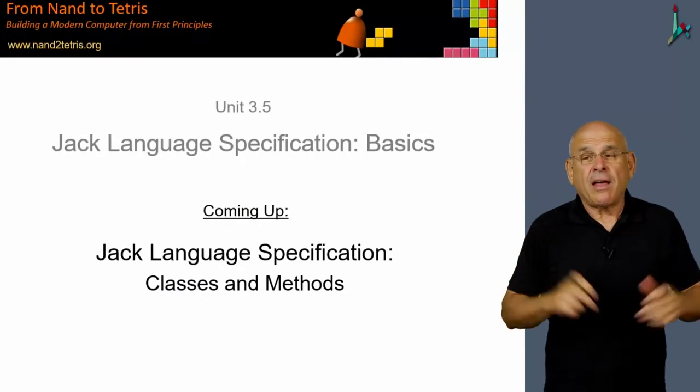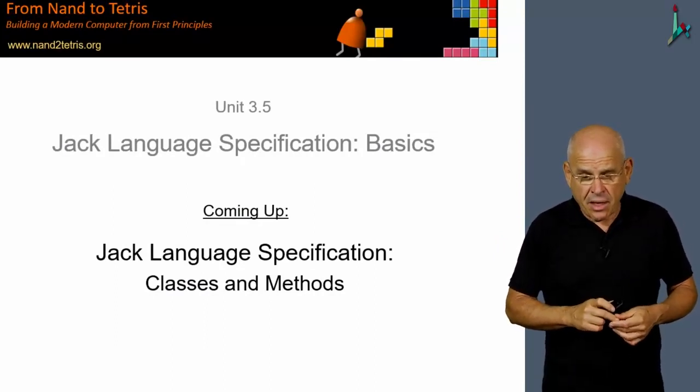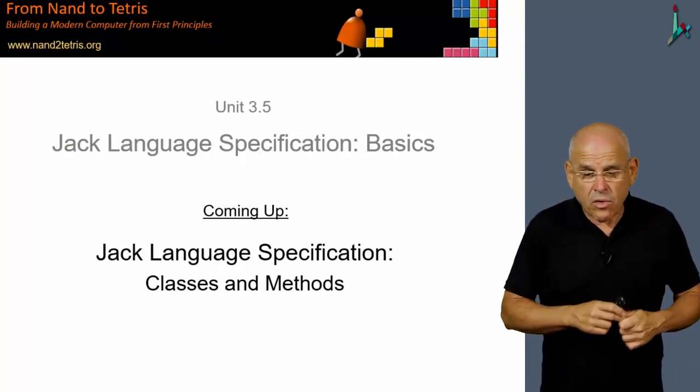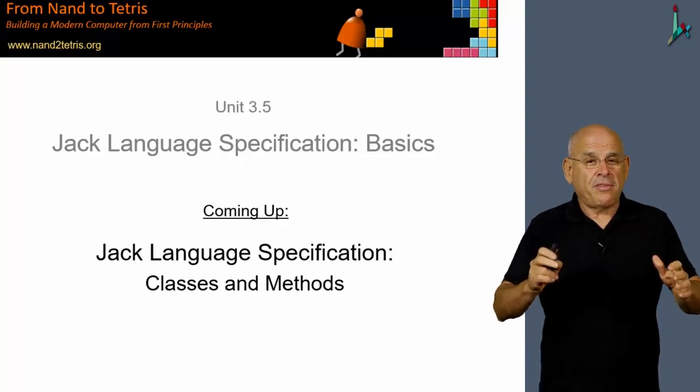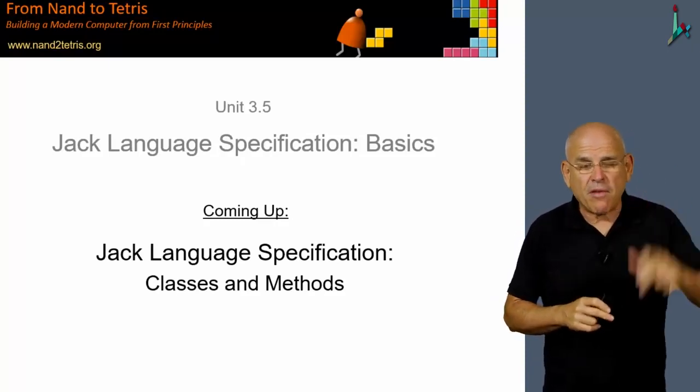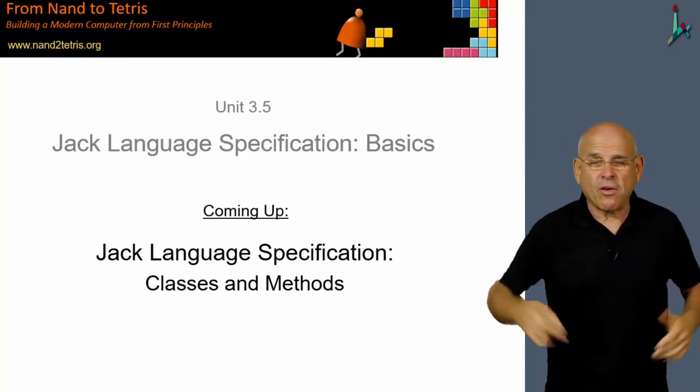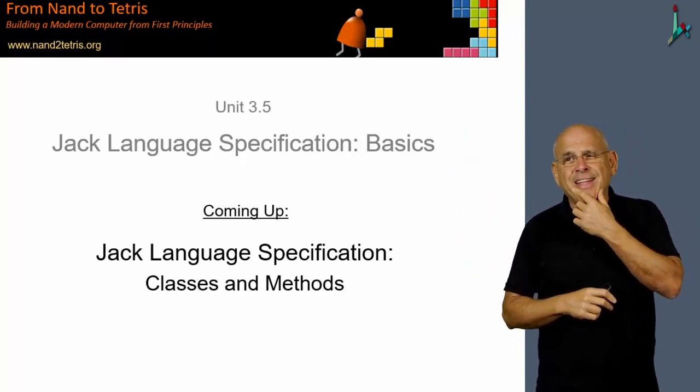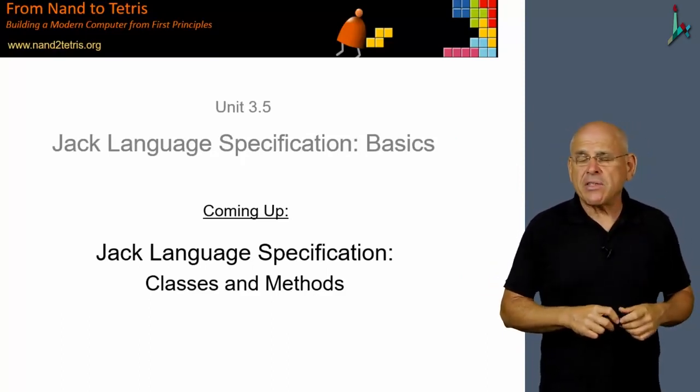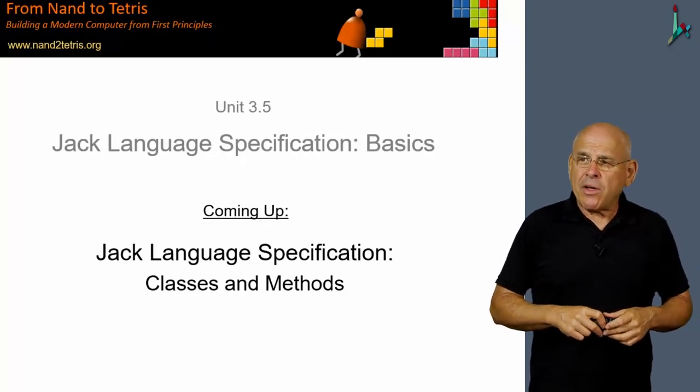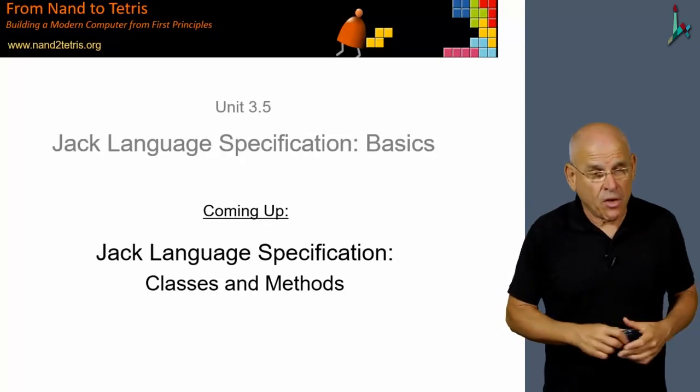So that's it. That's what I wanted to say about data types in Jack. And to sum up, we can conclude that Jack has a rather primitive set of types. We have only three of them. Now Java has eight. We have three. We could easily add more, but we didn't find it necessary from pedagogical values. And the Jack language is also weakly typed. In fact, it's very weakly typed.